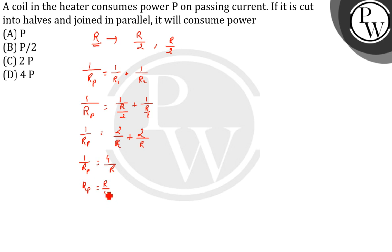Okay, now power consumed when two halves of wire are connected in parallel connection will be. So what is the formula for power consumed? P is equal to V square by Rp. So it will be equal to V square by Rp.